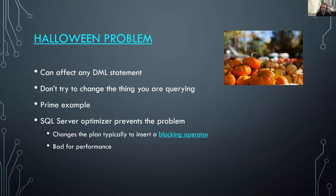SQL Server doesn't allow the Halloween problem to happen — it has protections in place. But these protections typically amount to inserting a blocking operator into your statement, and blocking operators are bad for performance. It causes SQL Server to not operate in normal row-by-row fashion. What I observed was SQL Server put its Halloween protections in place, inserted an eager spool in the middle of my execution plan, and now my statement was taking longer. This is bad for performance and we want to get rid of it.